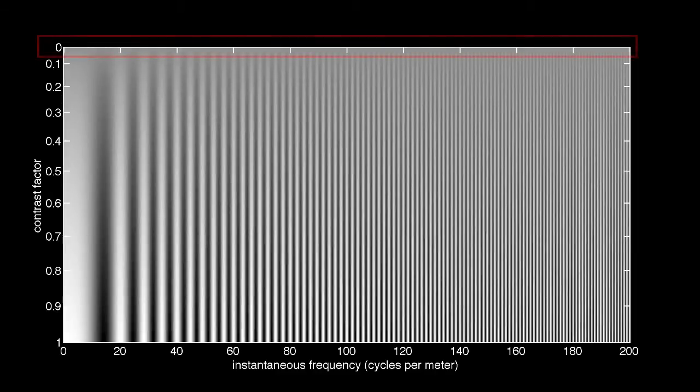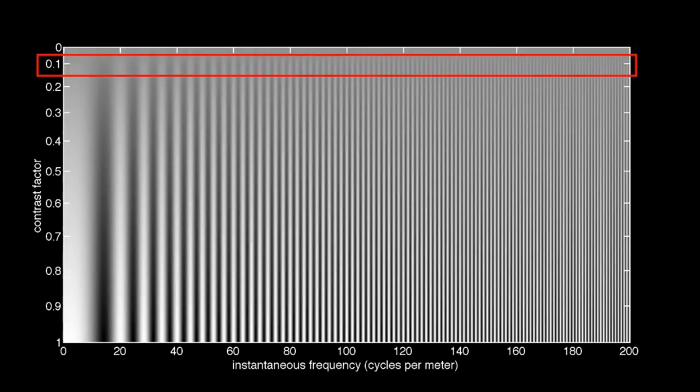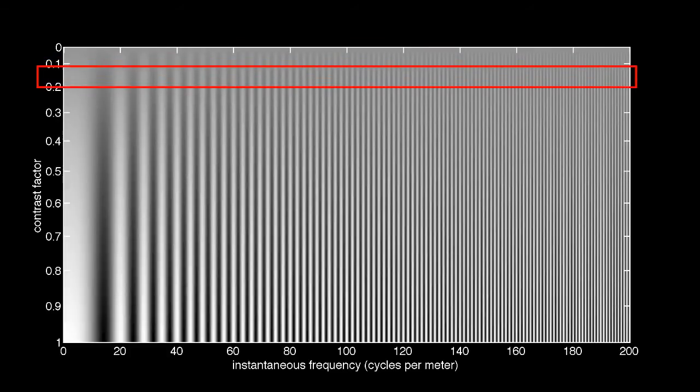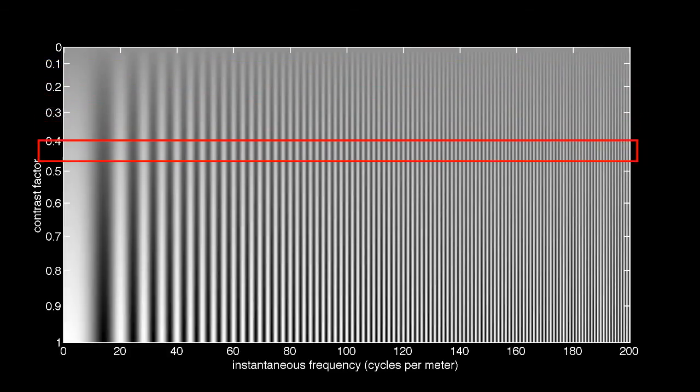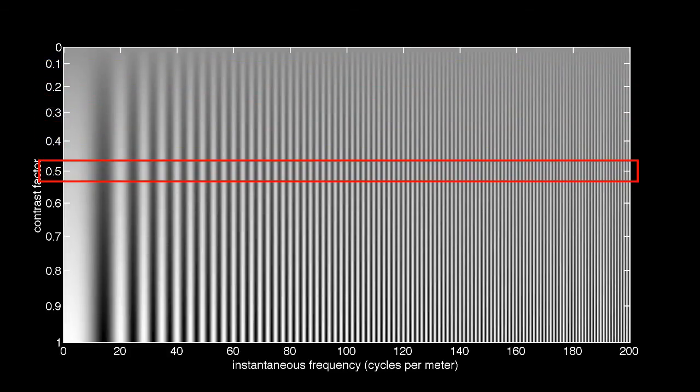Across the top of this image, the contrast factor is 0. This means that there is no peak to trough fluctuation about the average intensity value. A contrast factor of 0.1 means that the peak to trough fluctuation is one-tenth of the maximum intensity in this image. A contrast factor of 0.5 means the fluctuations are 50% of the maximum intensity.